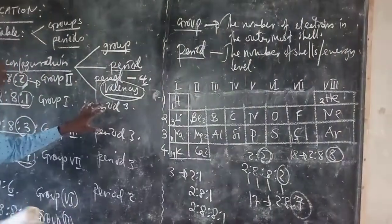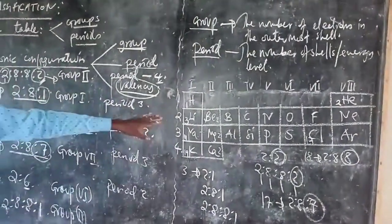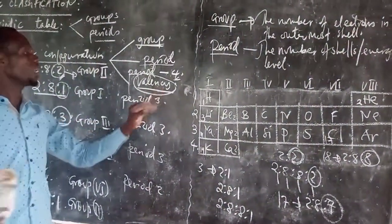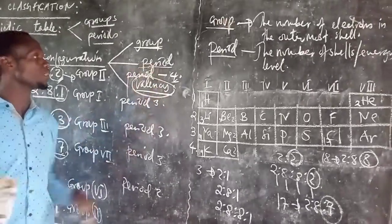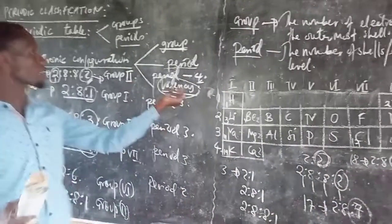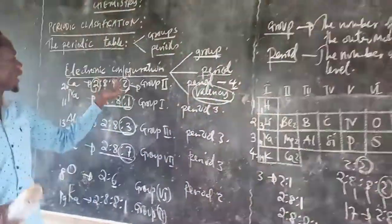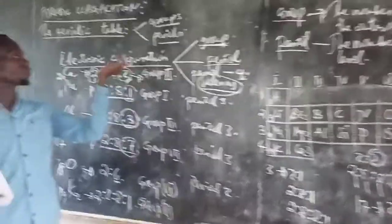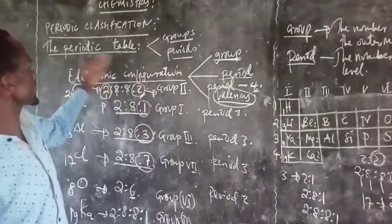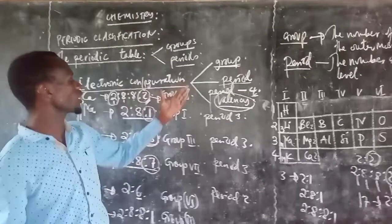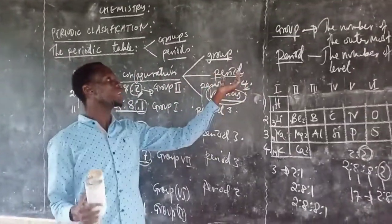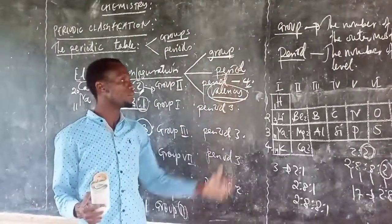The same applies — we may use electronic configuration to determine the valence of an element. That is to be done in the next lesson. For today, we end by establishing that electronic configuration can be used to determine the group and period of an element.